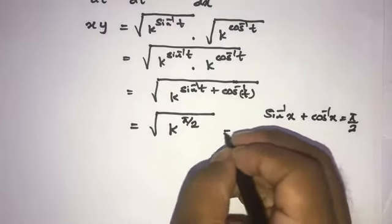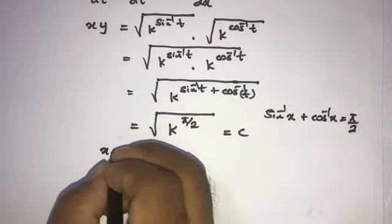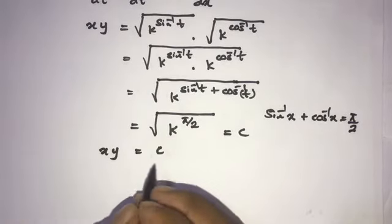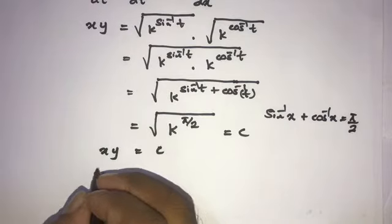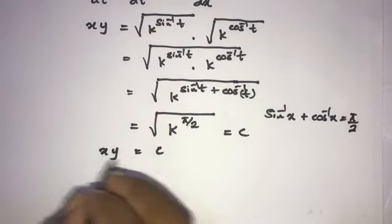This is a constant, so xy equals c. Now differentiate with respect to x. This is the product rule of differentiation.